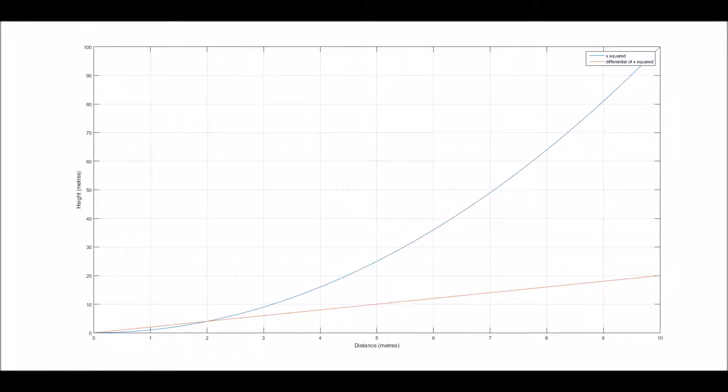However, we know the gradient is not constant, as we see in this graph of x squared and its gradient. But if we try to see how much x squared increases by an interval, just by multiplying the gradient of 2x by an interval length, we won't get the correct answer.